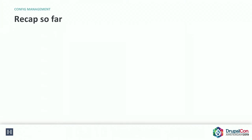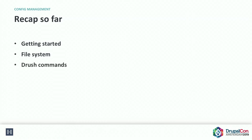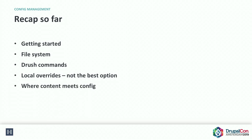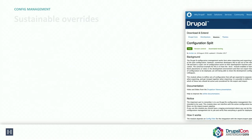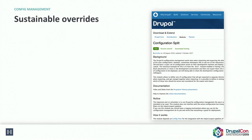A quick recap of where we are. We looked at getting started — one drush command and you're away. We looked at the file system and the fact that you want to move config. We spoke about the drush commands. We looked at local overrides, which maybe wasn't the best option. Where config and content meet — principally web forms. And the fact that there's a bit of a module minefield.